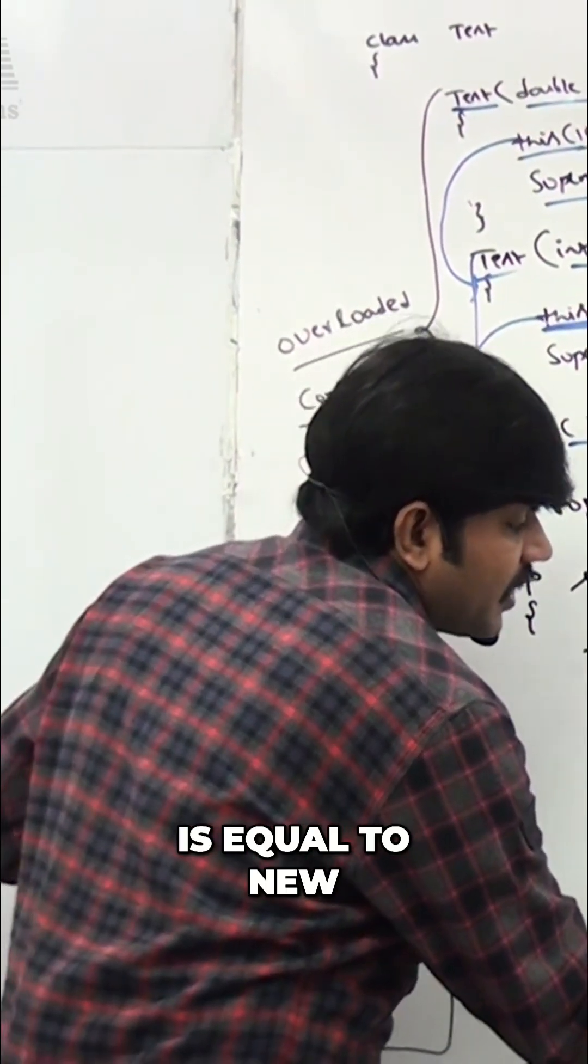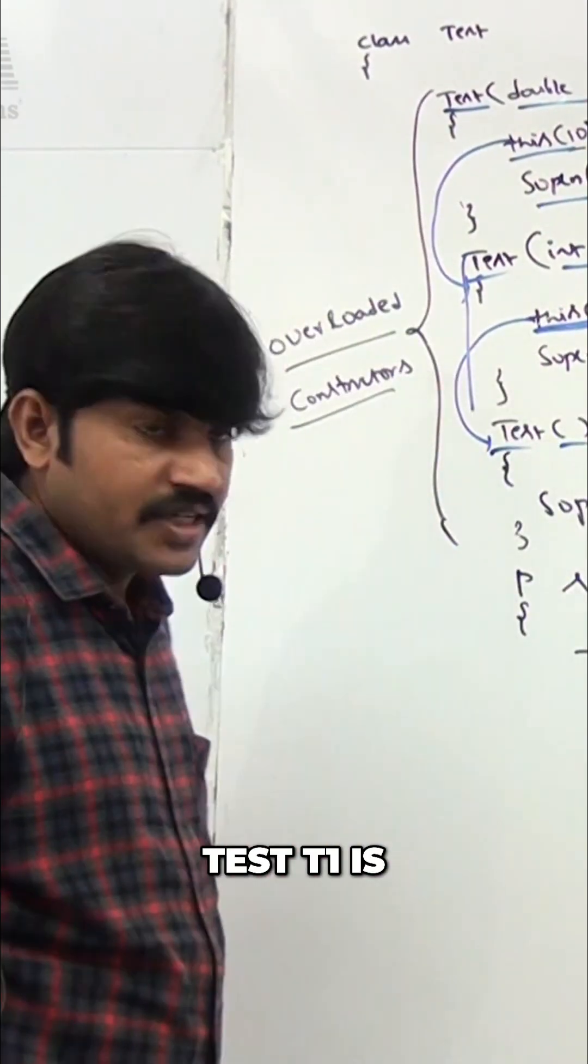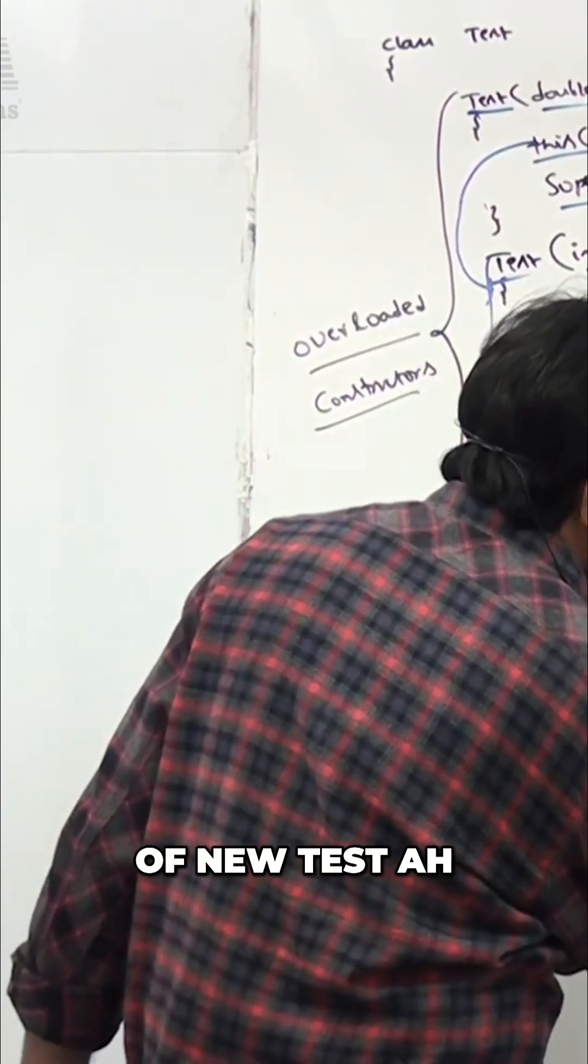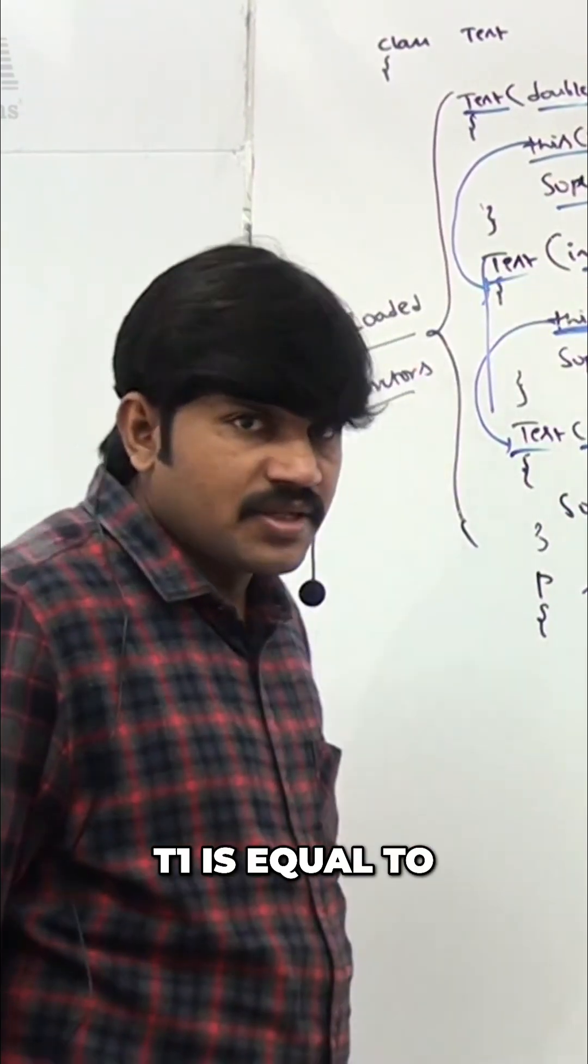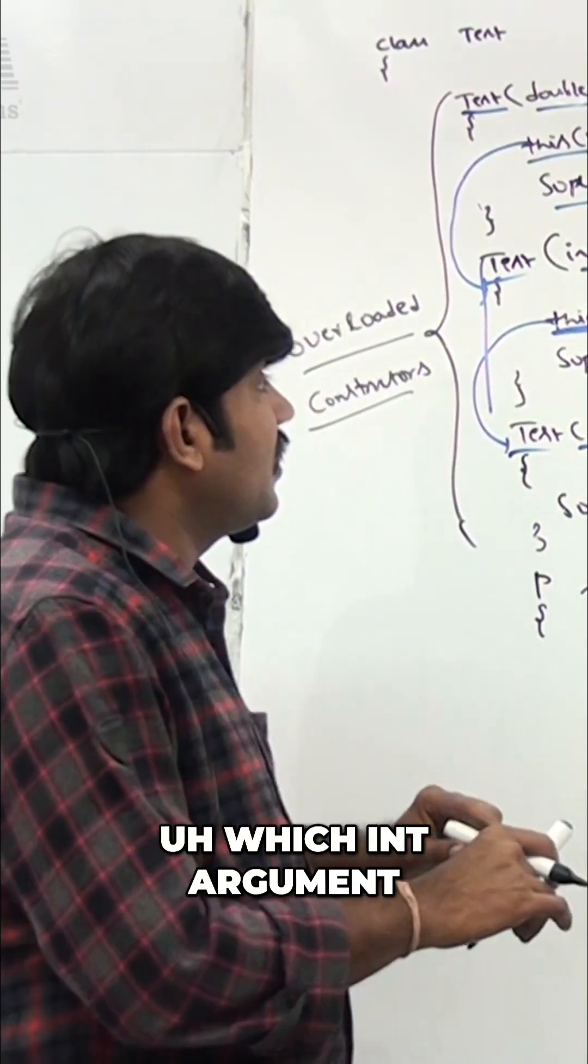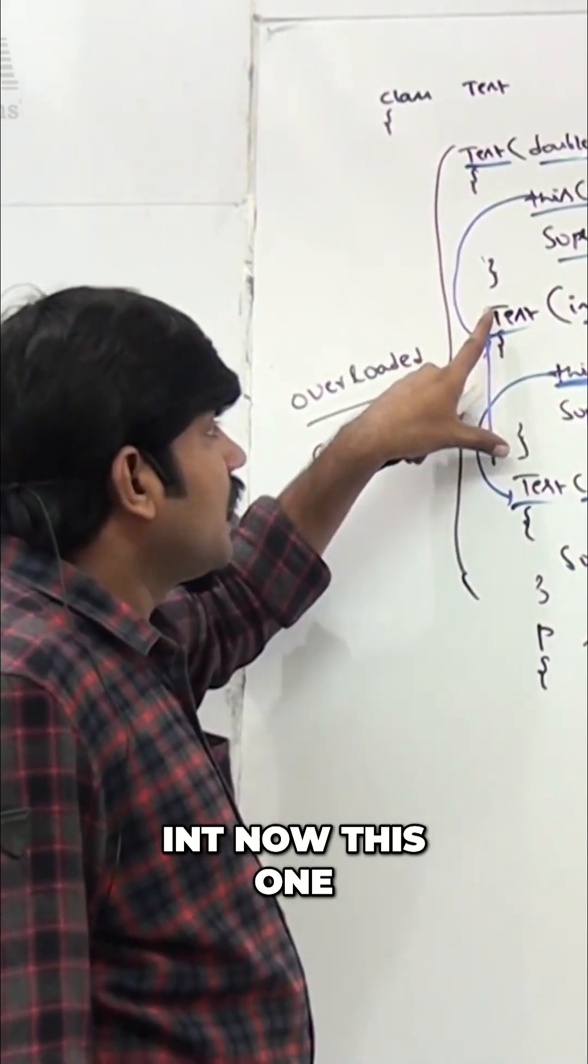Now I'm taking Test t1 = new Test(10). If I'm taking Test t1 = new Test(10), 10 means which argument? Int argument, right? Now this one, but as part of the int argument constructor...